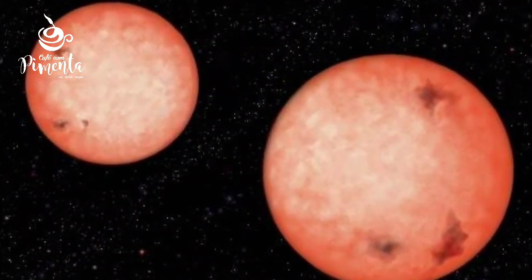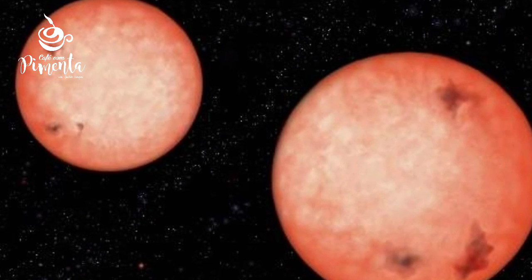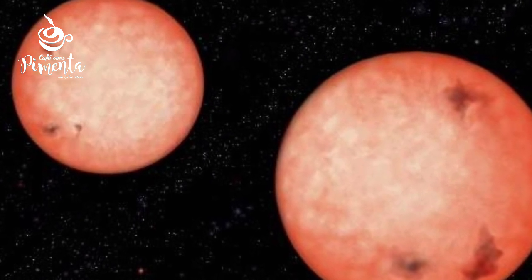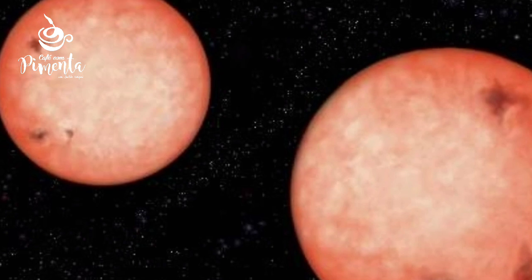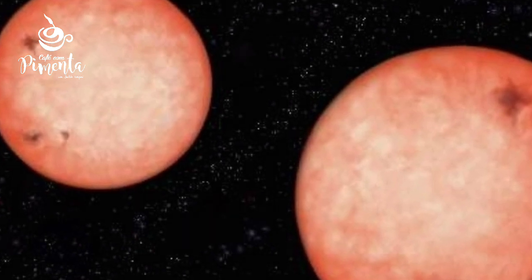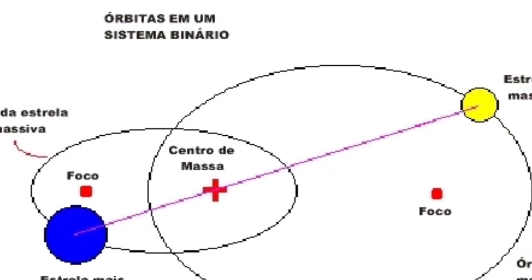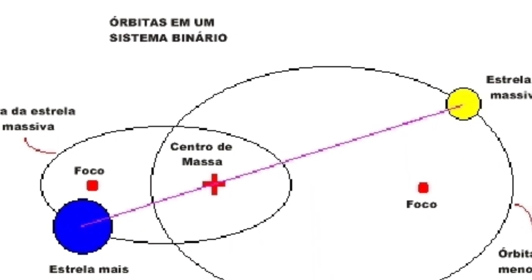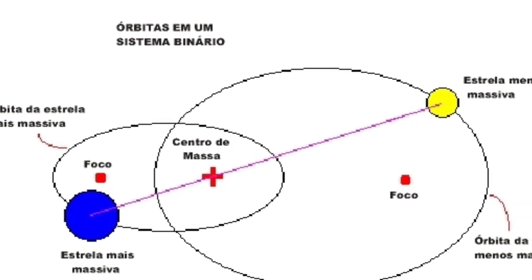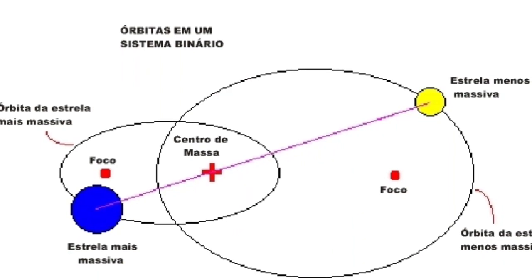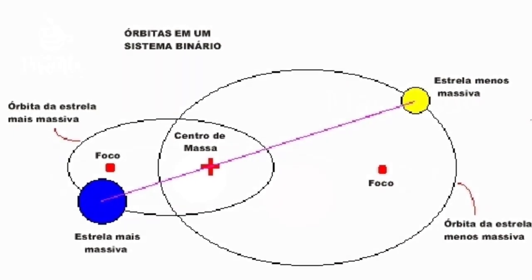Estrelas binárias são frequentemente detectadas visualmente, caso em que são chamadas de binárias visuais. Várias binárias visuais possuem longos períodos orbitais de vários séculos ou milênios e, portanto, as características de suas órbitas são pouco conhecidas ou não são conhecidas com precisão.